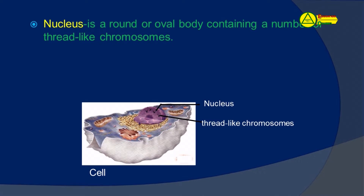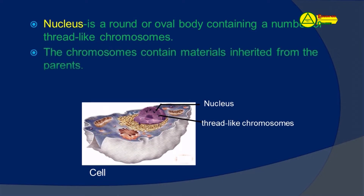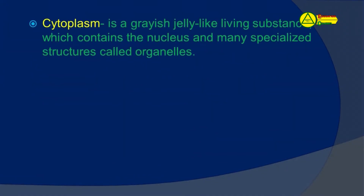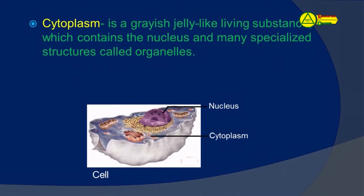The chromosomes contain materials inherited from their parents. The Nucleus is important in cell division and controlling the life processes of cells.